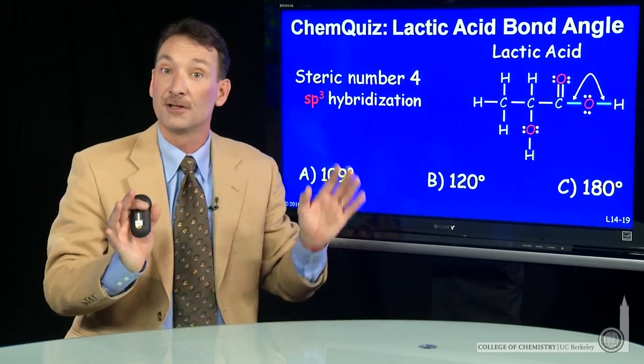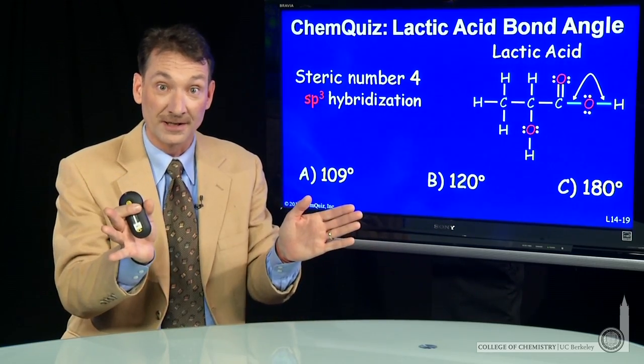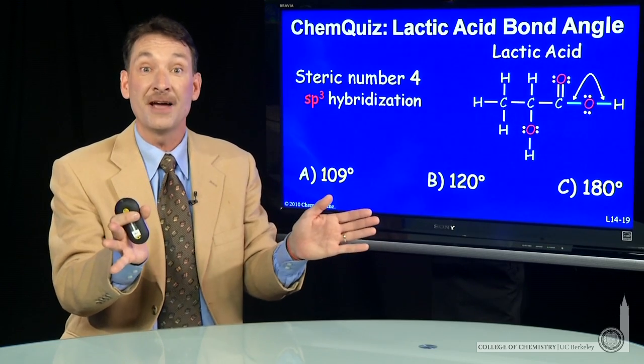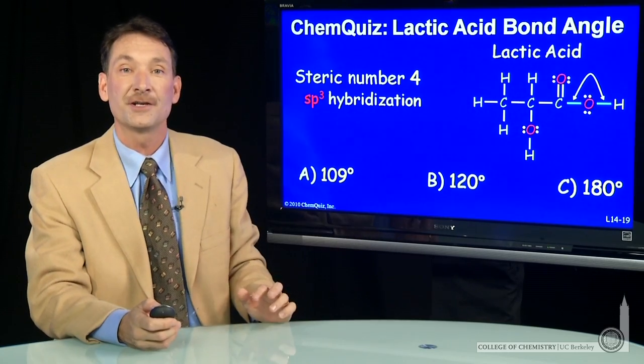The bond angle nominally will be 109 degrees. This one might be a little smaller because the lone pairs could constrict that a little, down to maybe 105 degrees. But near 109 degrees is the best approximation for that bond angle.